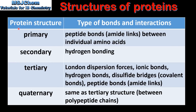Let's end with a summary of protein structure and the types of bonds and interactions. The primary structure has peptide bonds or amide links between individual amino acids. The secondary structure has hydrogen bonding. The tertiary structure has London dispersion forces, ionic bonds, hydrogen bonds, disulfide bridges which are covalent bonds, and peptide bonds or amide links. In the quaternary structure, the interactions between polypeptide chains are the same as those found in the tertiary structure.